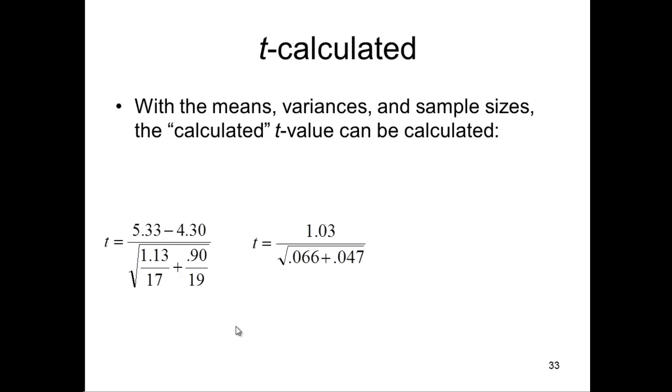And when you solve that, you get 1.03 divided by these values in the denominator. Then you get 1.03 divided by 0.336. And this 0.336 is the standard error of the difference between two means. And we get a t-value, a calculated t-value of 3.07. So that's the t-value associated with the independent sample t-test.